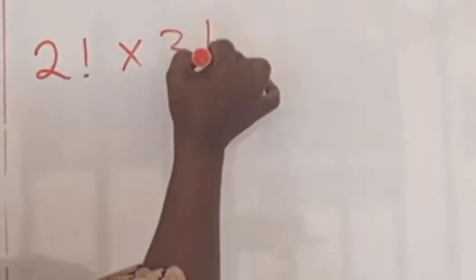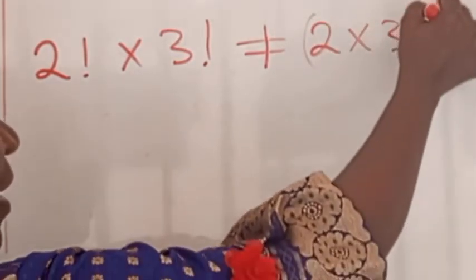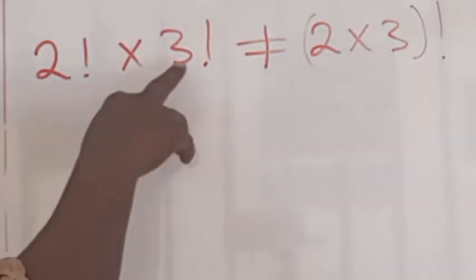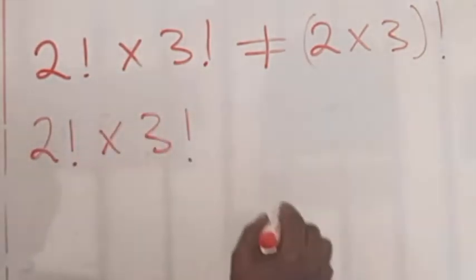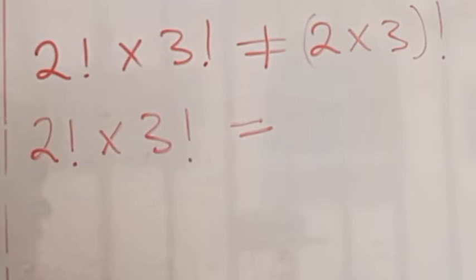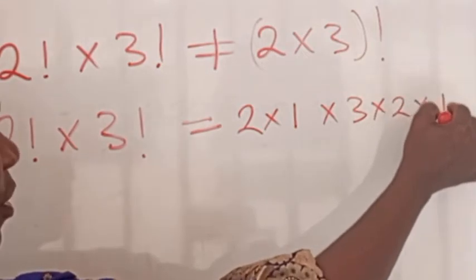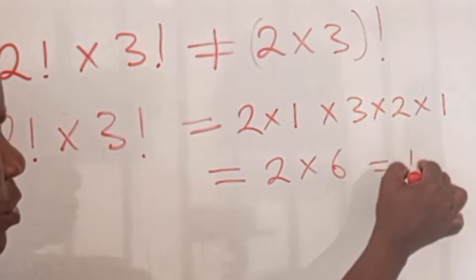Now let's compute the following. Compute two factorial times three factorial. Observe that this is not equal to two times three factorial — it is not equal to that. Two factorial times three factorial equals two times one, times three times two times one, which equals two times six, equal to 12.